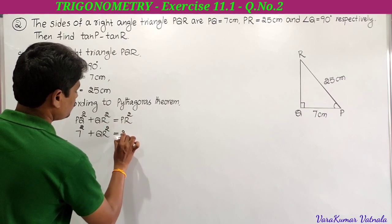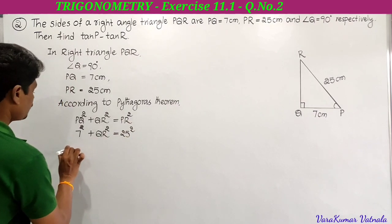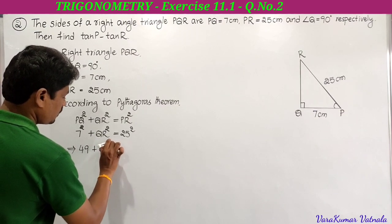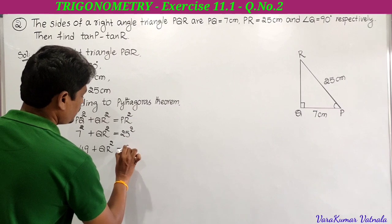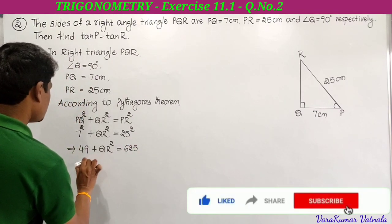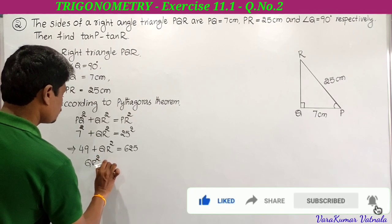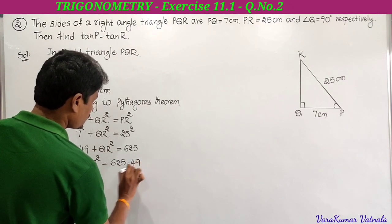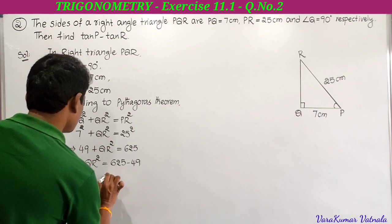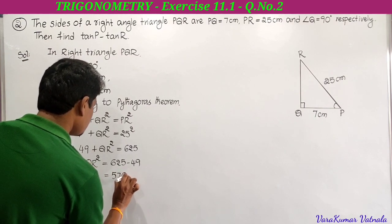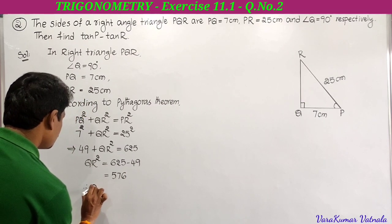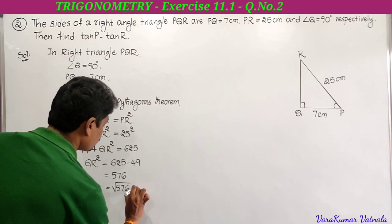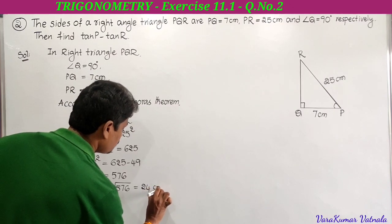PQ equals 7, so 7 square plus QR square equals PR square, which is 25 square. 7 square is 49 and 25 square is 625. So QR square equals 625 minus 49, which gives 576.